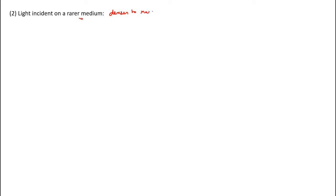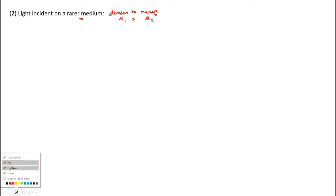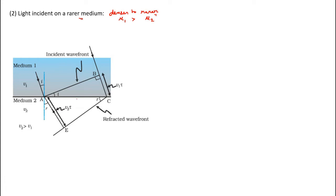Now we can see the second case for refraction, that is light incident on a rarer medium — light travels from denser to rarer medium. Case 1 was light traveling from rarer to denser. Here, the rarer medium is the second medium. A rarer medium is one whose refractive index is less, so mu1 is greater than mu2. Let's go to the diagram: light traveling from denser medium to rarer medium.